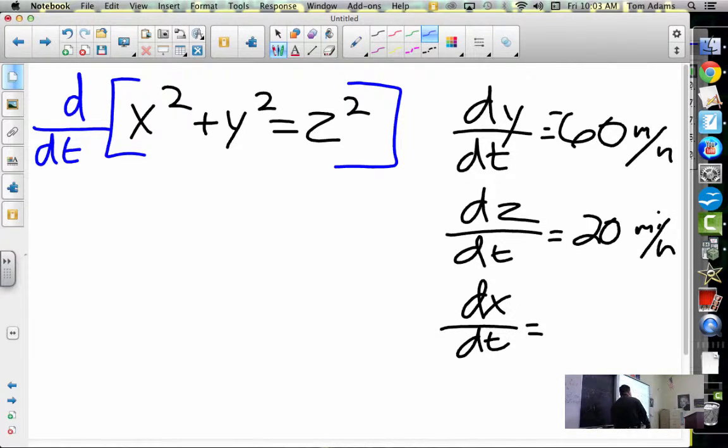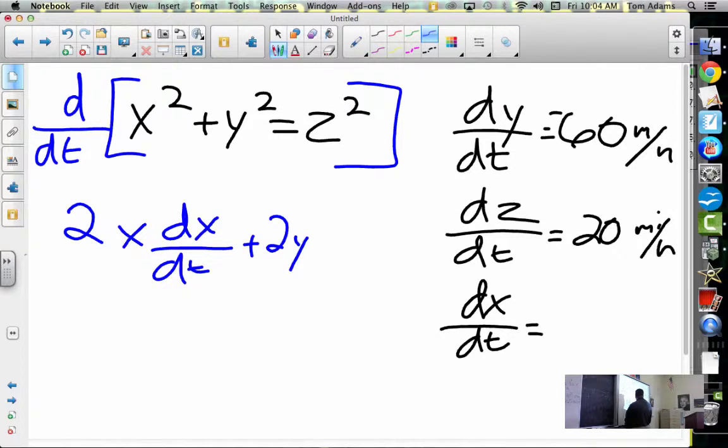What's the derivative of X squared? 2X. So I'm going to say 2X, but I'm taking the derivative of X with respect to time. What's the derivative of Y squared? 2Y. What do I put here? dy/dt. And what's the derivative of Z squared? 2Z dz/dt. See what I did there?